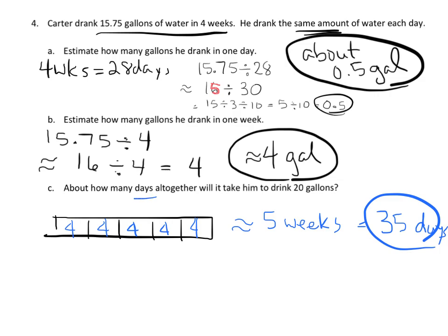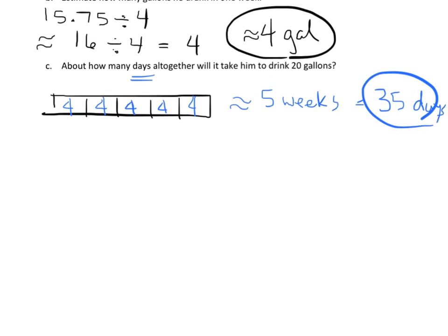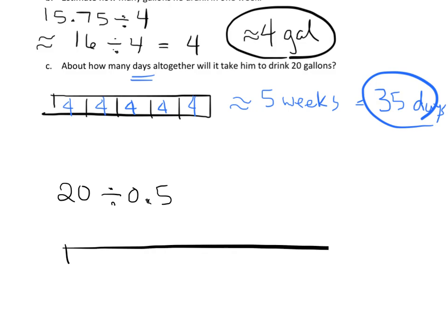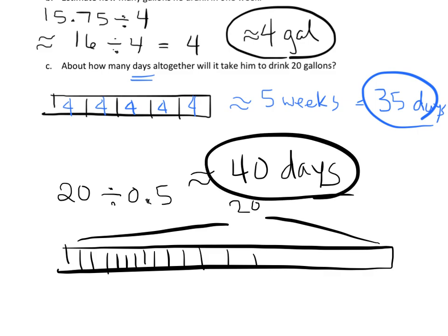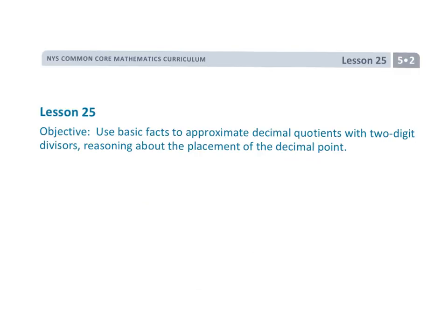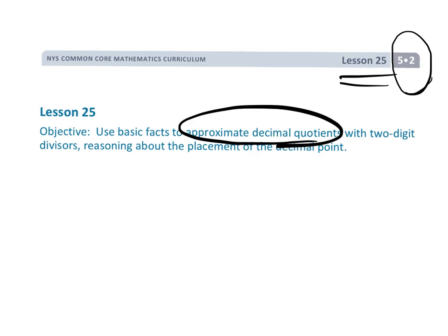Another way to think about it: we estimated about half a gallon per day, so we ask how many halves are in 20 gallons. That means 20 divided by 0.5 equals about 40 days. So using one estimation we get 35 days, using another we get 40 days — and both are perfectly fine. That is Grade 5 Module 2 Lesson 25: approximating decimal division problems.